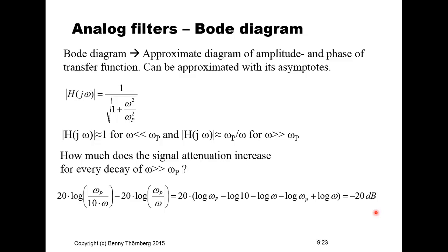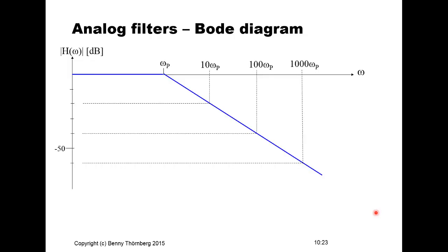Using these conclusions we can draw an asymptotic representation of the amplitude transfer diagram. For all frequencies below the pole frequency ω_p, the attenuation is 0 dB. Above ω_p, there is a slope of −20 dB per decade: at 10·ω_p we have −20 dB, at 100·ω_p we have −40 dB, and at 1000·ω_p we have −60 dB.